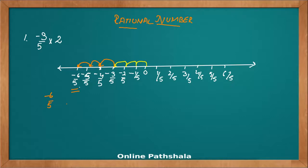I am repeating again. When I have to multiply, what this means is you can elaborate it as minus 3 by 5 plus minus 3 by 5 — it's like 2 times I am adding the same number. So I have to jump minus 3 by 5 two times. I am jumping one time shown in yellow and the second time shown in orange to arrive at position minus 6 by 5.